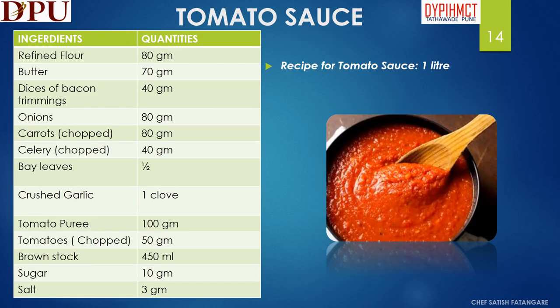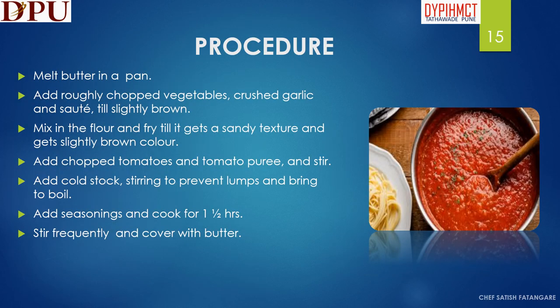In this slide we will discuss about the ingredients and the recipe of tomato sauce. The ingredients required are refined flour, butter, diced bacon trimmings, onions, carrots, celery, bay leaves, crushed garlic, tomato purée, chopped tomatoes, brown stock, sugar and salt. To prepare tomato sauce: melt the butter in a pan. Add roughly chopped vegetables, crushed garlic and sauté till slightly brown. Mix in the flour and fry till it gets a sandy texture and slightly brown color. Add chopped tomatoes and tomato purée and stir. Add cold stock, stirring to prevent lumps and bring to boil. Add seasonings and cook for one and a half hours. Stir frequently and cover with butter.